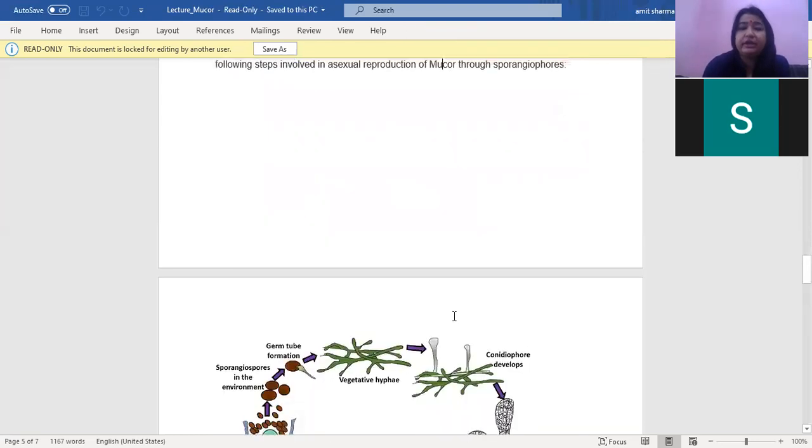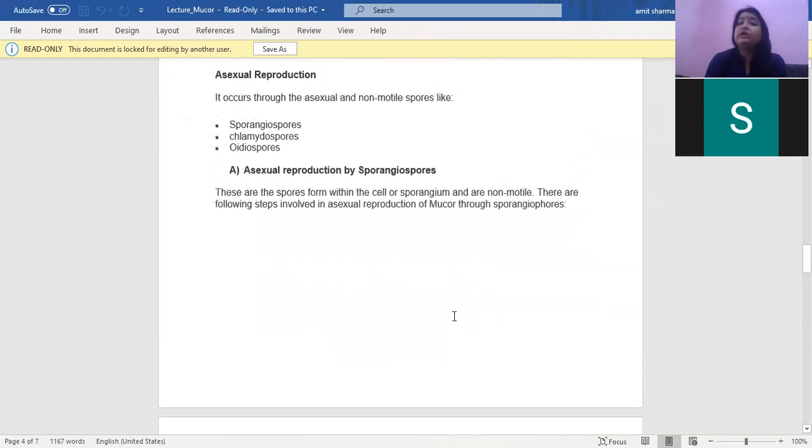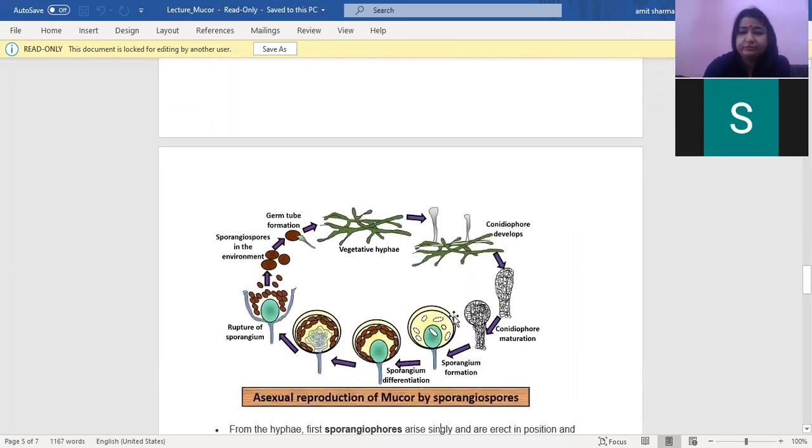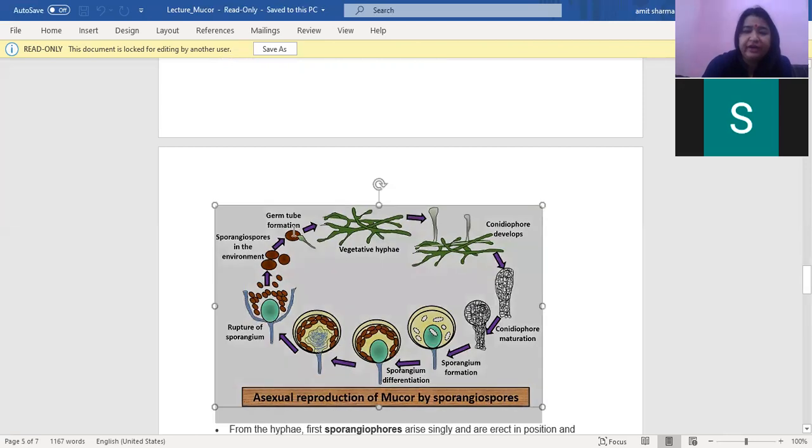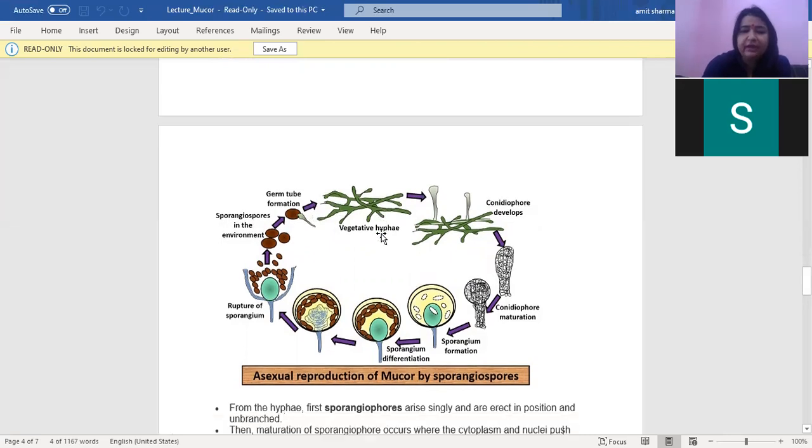The asexual reproduction occurs by three types: asexual reproduction by sporangiospores, asexual reproduction by chlamydospores, and asexual reproduction by oidiospores. The sporangiospores are the non-motile spores. This is a vegetative hyphae of MUCR. It has formed upward the prostrate hyphae, which are called conidia. The conidia on maturation forms a columella and the spores, the sporangium. On the rupture of this sporangium, the spores are generated and each of the spore forms the germ tube to form the vegetative hyphae.